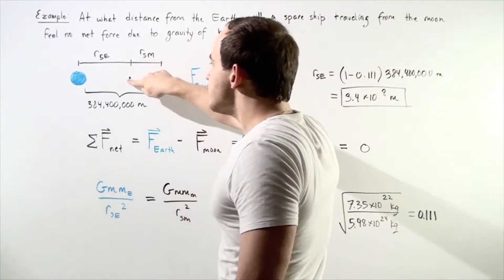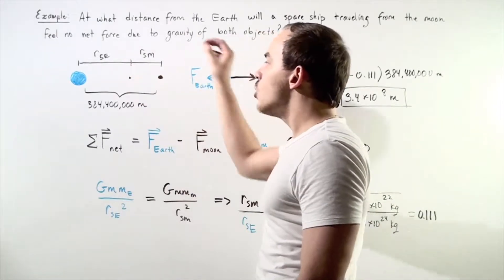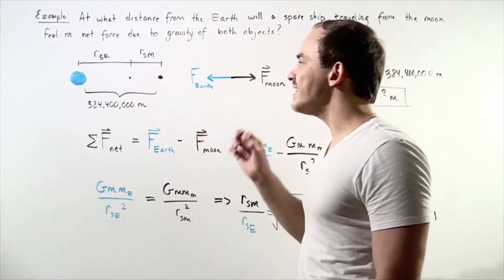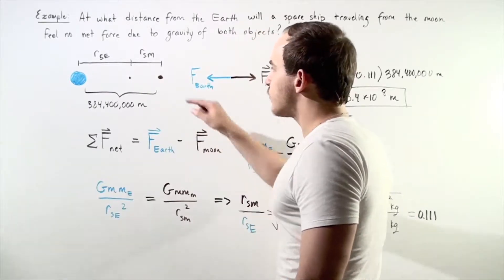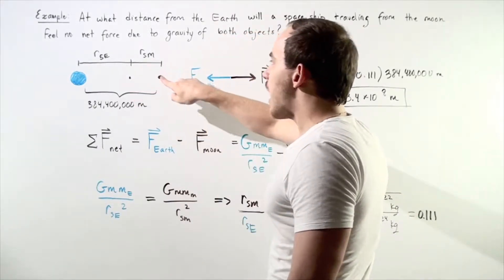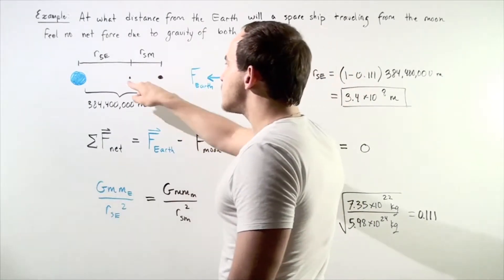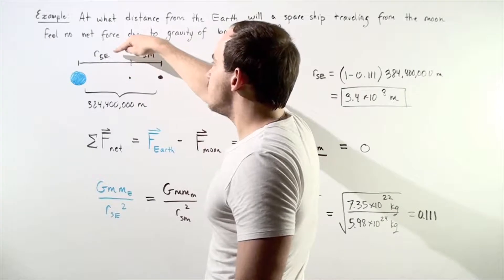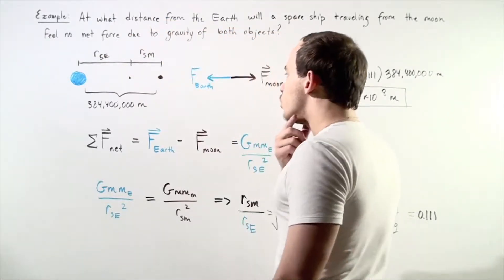Let's suppose this is the position of our spacecraft, of our spaceship, where it feels no net force. The net force on our object at this point is zero. Let's choose our distance from the spacecraft to our Moon to be RSM, and the distance from our spacecraft to the Earth is RSE, where SE is simply spacecraft Earth, and SM is simply spacecraft Moon.